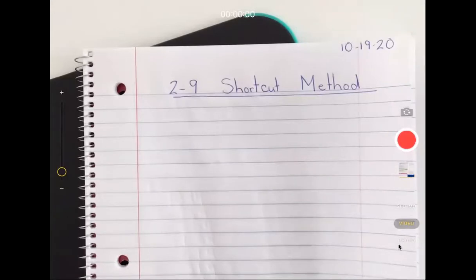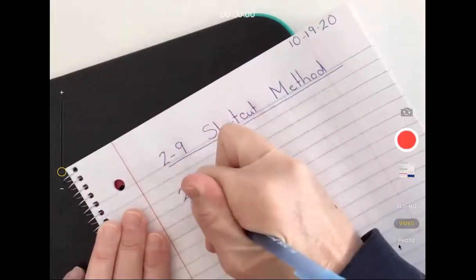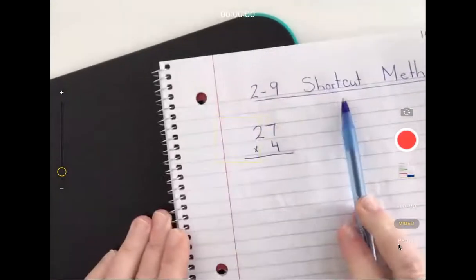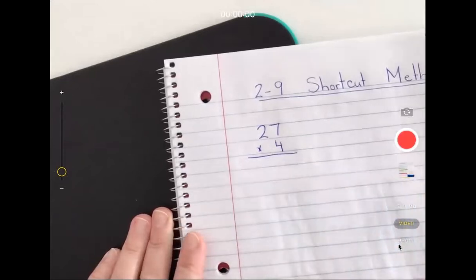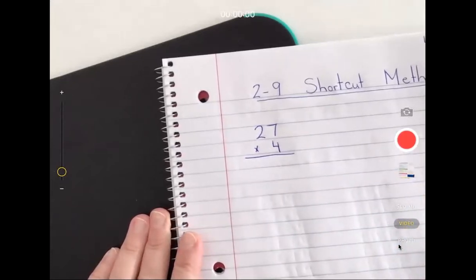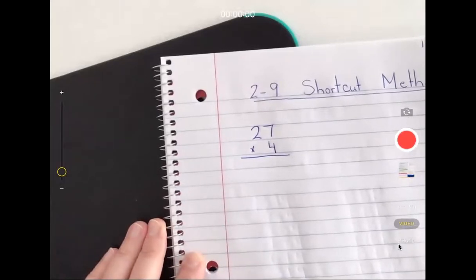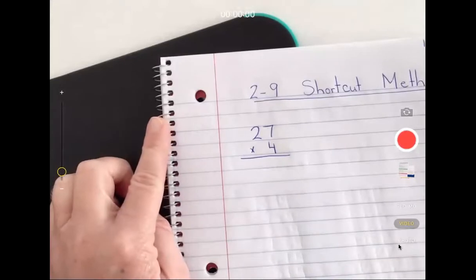Today I'm going to show you how we use the shortcut method to numerically solve 27 times 4, and we're going to do multiple practices today. We'll also do them when we're live during math practice.